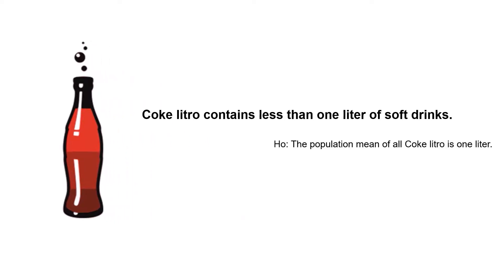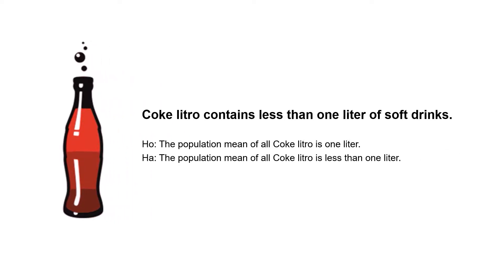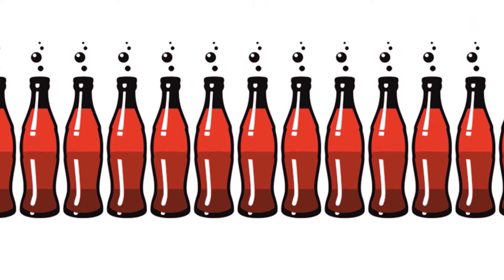For example, suppose you suspect that Coke Litro contains less than one liter of soft drinks. A null hypothesis might be that the population mean of all Coke Litro is one liter. The alternative hypothesis is that the population mean of all Coke Litro is less than one liter. To test the hypothesis, you may get samples by collecting 30 Coke Litro, then measure and record the volume of each.